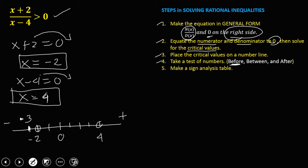Between the two critical values — between negative 2 and 4 — we can use negative 1, 0, 1, 2, or 3. I prefer to use 0 because it's easy to solve when x equals 0. Then after the last critical value, after positive 4, we use 5. These are the numbers we're going to test.